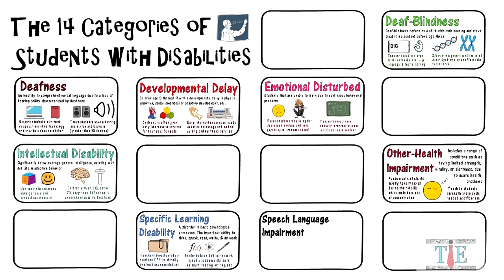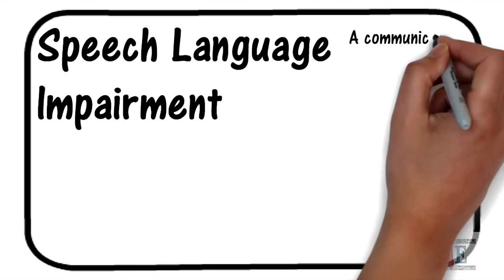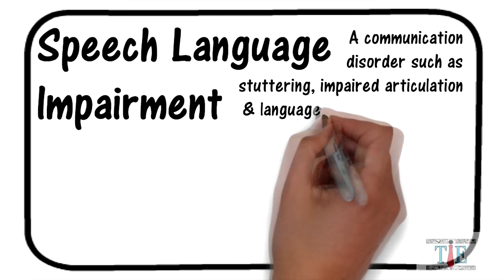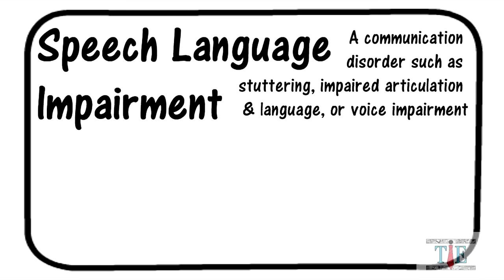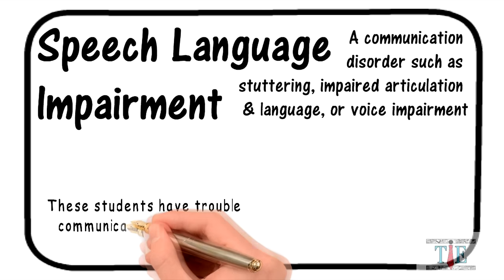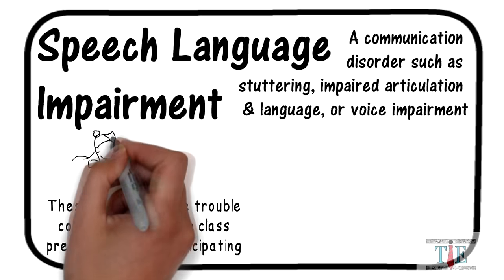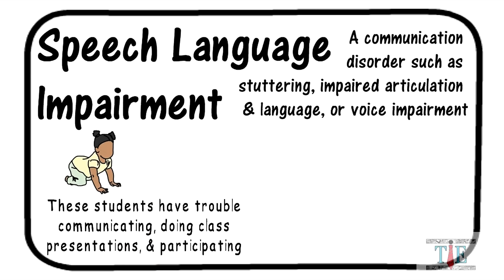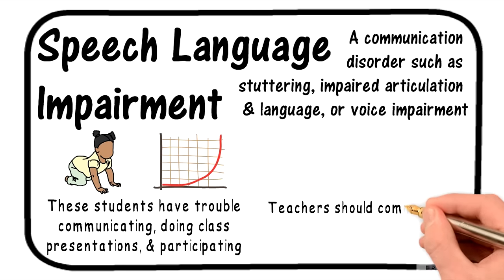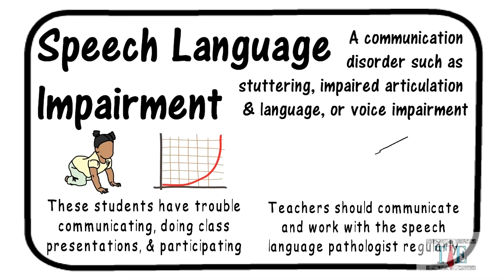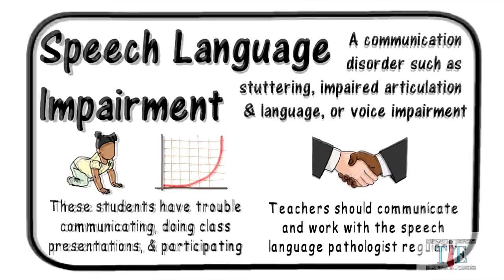The upcoming category on the board: speech-language impairment. These students are defined as having a communication disorder such as stuttering, impaired articulation, and language or voice impairment. These students have trouble communicating, doing class presentations, and participating. Students with speech-language impairment are identified at a very early age, and research has shown great improvement from early intervention. Teachers should communicate and work with the speech-language pathologist on a regular basis. Build a relationship with speech teachers that revolves around providing the best education for the student.